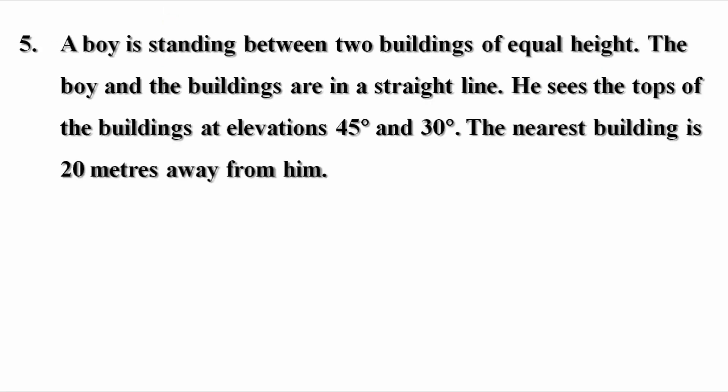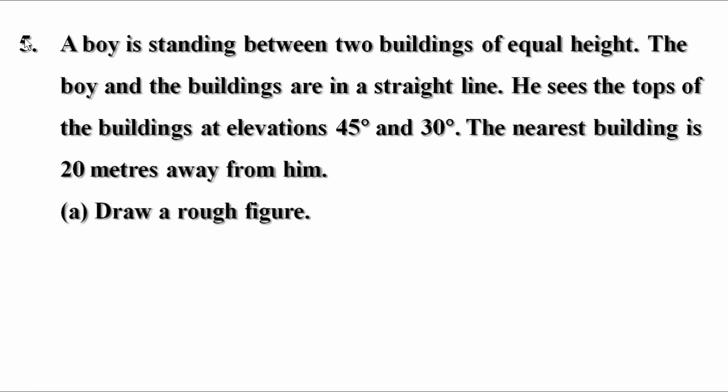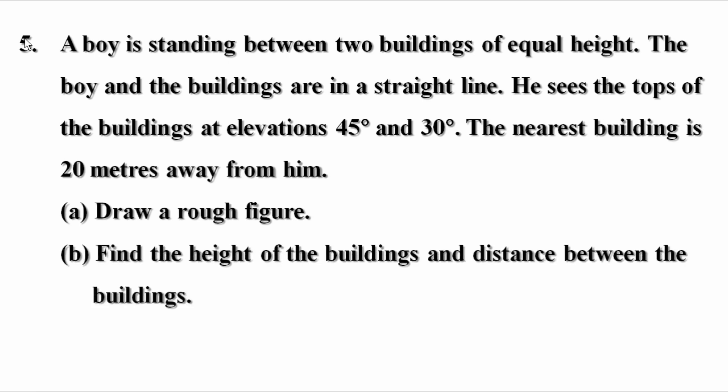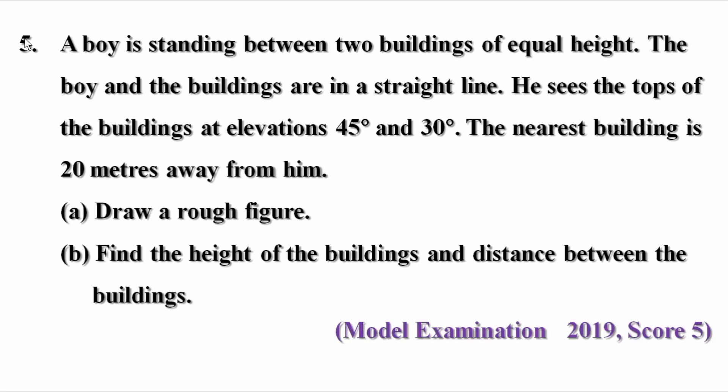Fifth question. A boy is standing between two buildings of equal height. The boy and the buildings are in a straight line. He sees the tops of the buildings at elevations 45 degree and 30 degree. The nearest building is 20 meters away from him. Draw a rough figure. Find the height of the buildings and distance between the buildings. It is a question from model examination 2019 and the score is 5.